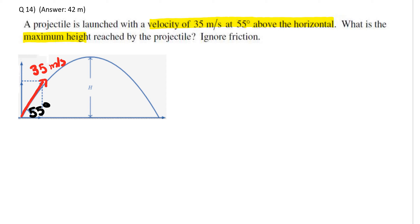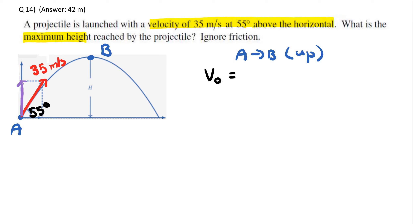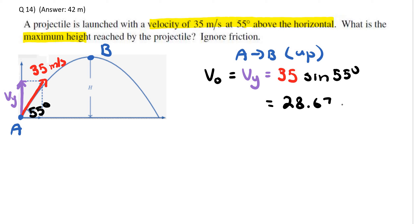We start at point A and we're interested in finding the maximum height, going from A to B in the upward direction. The initial velocity for this problem is the vertical velocity component Vy, found by taking the launch velocity of 35 and multiplying by sine of 55 degrees. That gives us roughly 28.67 meters per second, which is our initial velocity.